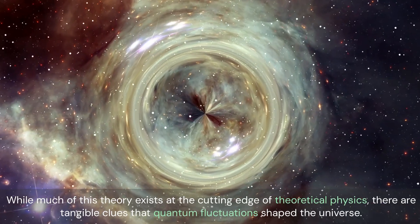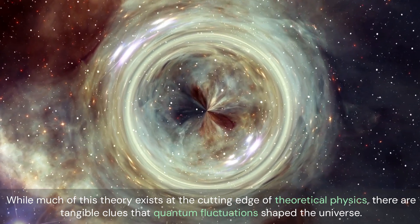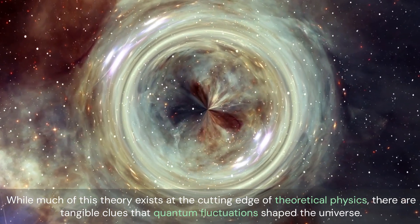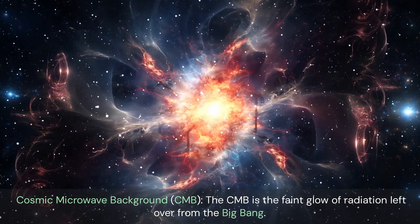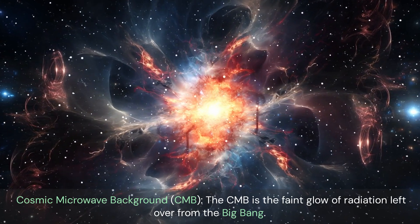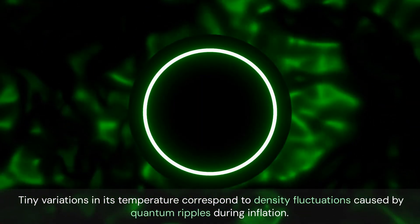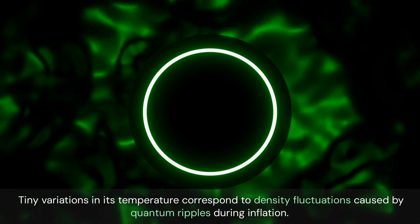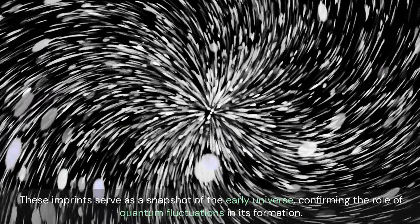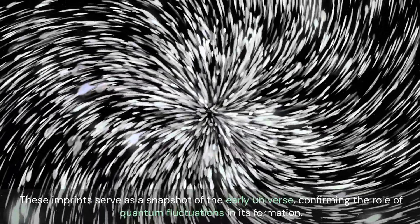While much of this theory exists at the cutting edge of theoretical physics, there are tangible clues that quantum fluctuations shape the universe. The cosmic microwave background, or CMB, is the faint glow of radiation left over from the Big Bang. Tiny variations in its temperature correspond to density fluctuations caused by quantum ripples during inflation. These imprints serve as a snapshot of the early universe, confirming the role of quantum fluctuations in its formation.